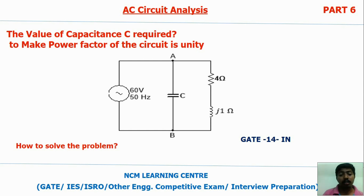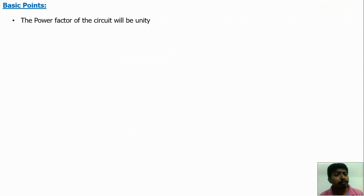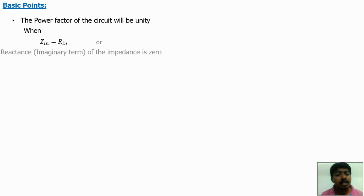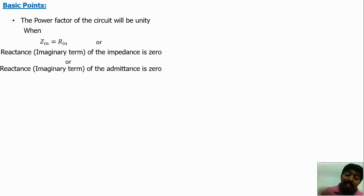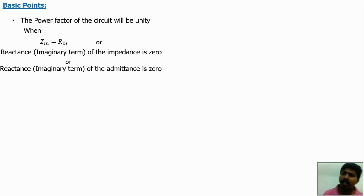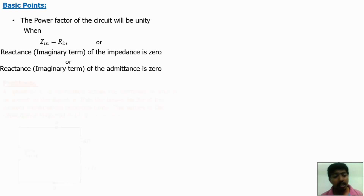The question we have to find is: how much capacitance is required to make the power factor unity? The basic concept is: the power factor of the circuit will be unity when the impedance equals the resistance, meaning the reactance is zero. Reactance zero means the imaginary part of the impedance is zero, or the imaginary part of the admittance is zero. Then only the power factor will be unity.